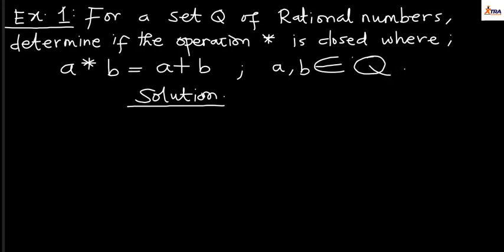They are giving us a set Q of rational numbers, so our knowledge of numbers and numeration is very important. We must be able to differentiate between rational numbers, integers, positive and negative, natural numbers, real numbers, and complex numbers. Looking at this question, the operation A asterisk B equals A plus B means this asterisk is basically representing addition.